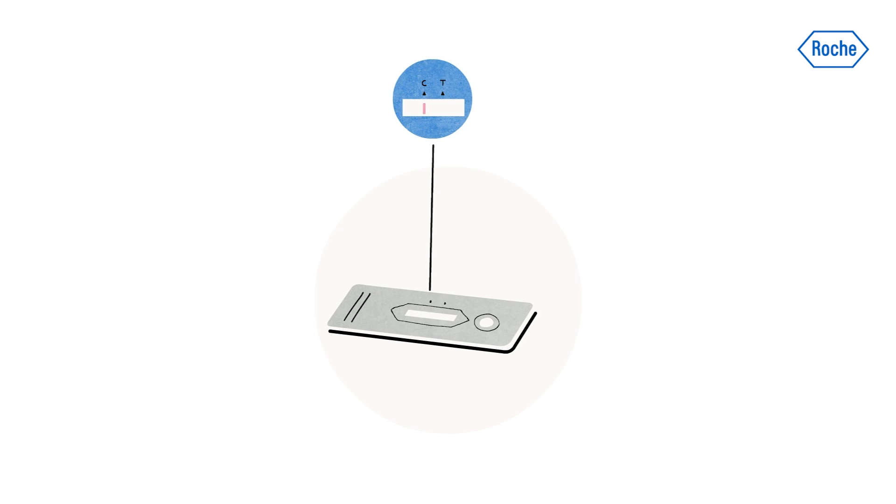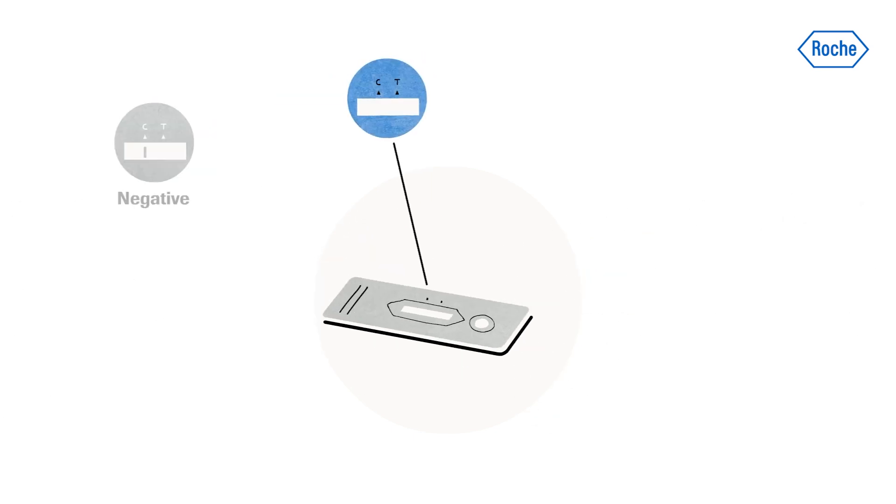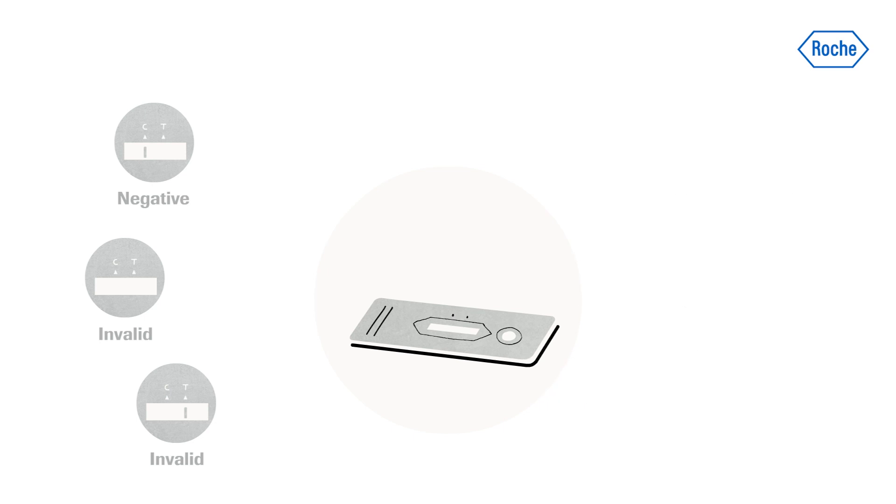If the control line C is the only visible line, the test is negative. If no control line C is visible, the result is always invalid and the test should be repeated using a new device.